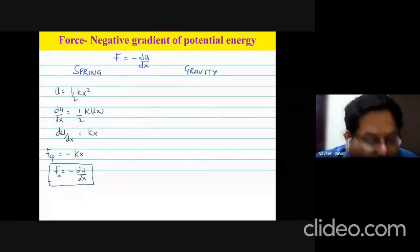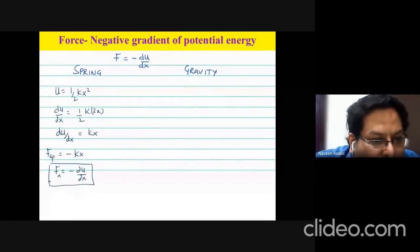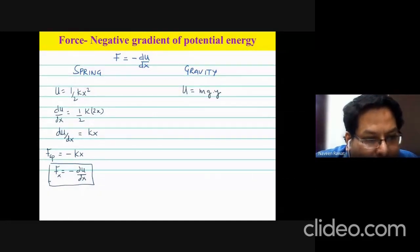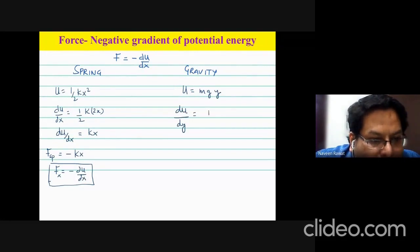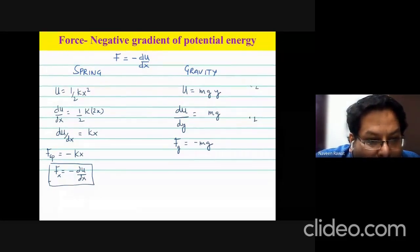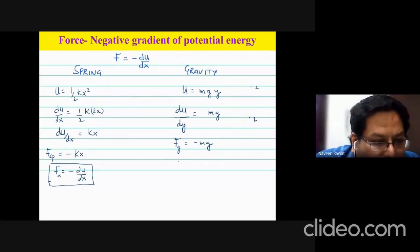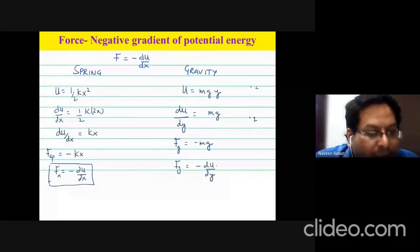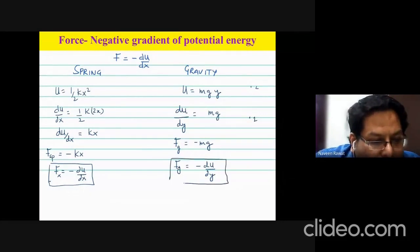For gravity, the potential energy is U = mgy, where y is the height. Taking the derivative dU/dy gives mg, since m, g are constants and dy/dy = 1. The force exerted by gravity is −mg — negative because gravity acts opposite to the direction of increasing y. Again, this confirms that the gravitational force equals −dU/dy, verifying the relationship between force and potential energy.